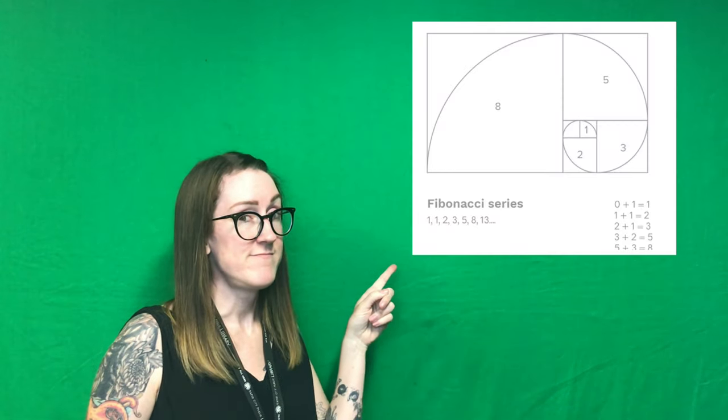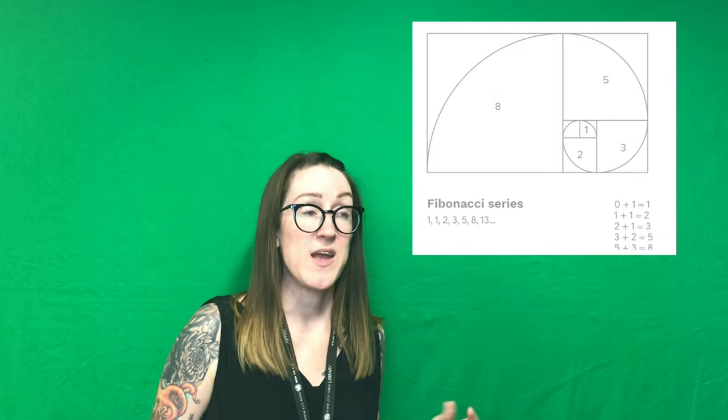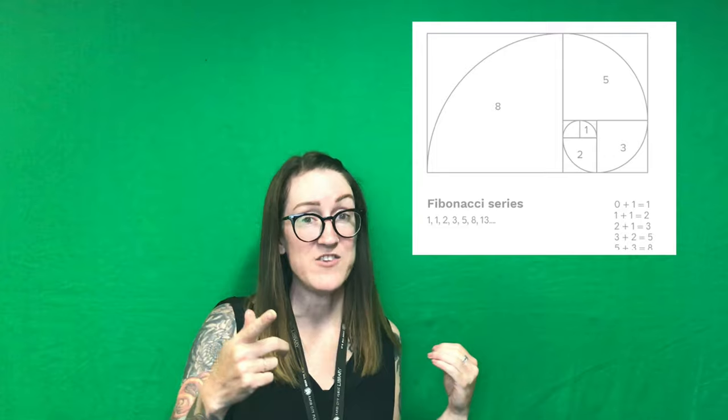If you take the Fibonacci sequence and graph it to get a picture of what those numbers make, it looks like this. This is called the golden ratio, and we see it all the time — we see it in nature, we see it in art, and we even see it in the foods that we eat.